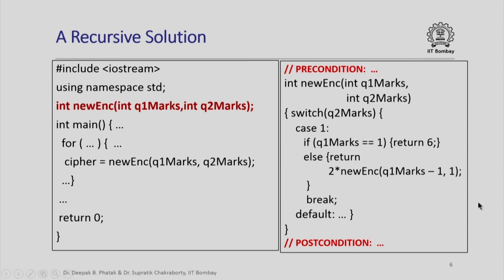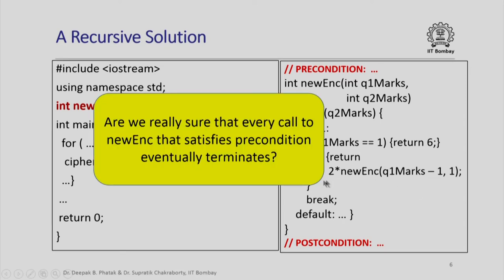Given this recursive solution, one might ask: are we really sure that every invocation of new_enc satisfies the precondition? Our precondition is that both q1_marks and q2_marks lie between 1 and 10. But even if they always lie in that range, are we sure that every invocation of new_enc is eventually going to terminate? Since new_enc calls itself, could it be that one invocation calls another which calls another, and this process continues forever without the program ever terminating?